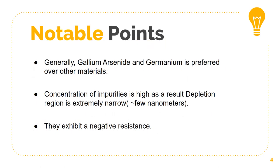Here are some notable points to remember. A tunnel diode is generally made up of germanium and gallium arsenide. The concentration of impurities in a tunnel diode is 1000 times greater than a normal PN junction diode. As a result, the PN junction has an extremely narrow depletion region in the order of nanometers.